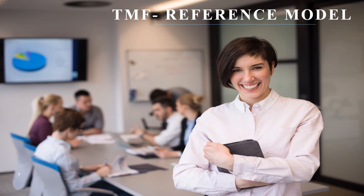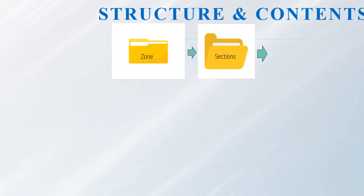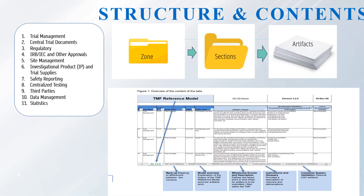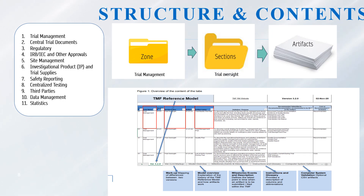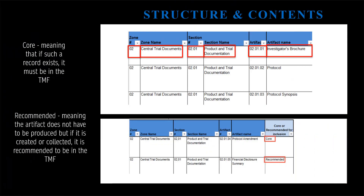I hope you now have a clear idea of why the TMF reference model is important. The TMF reference model is divided into zones, sections, and artifacts. There are 11 zones, like trial management, central trial documents, IRB/IEC and other approvals, etc., as you can see on your screen. Each zone will have various subsections, and each section will store the artifacts. These artifacts are collections of information presented in records, documents, or data that one would expect to find in a TMF at both sponsor and investigator's sites. For example, zone: trial management; section: trial oversight — which will store artifacts like the trial master file plan.